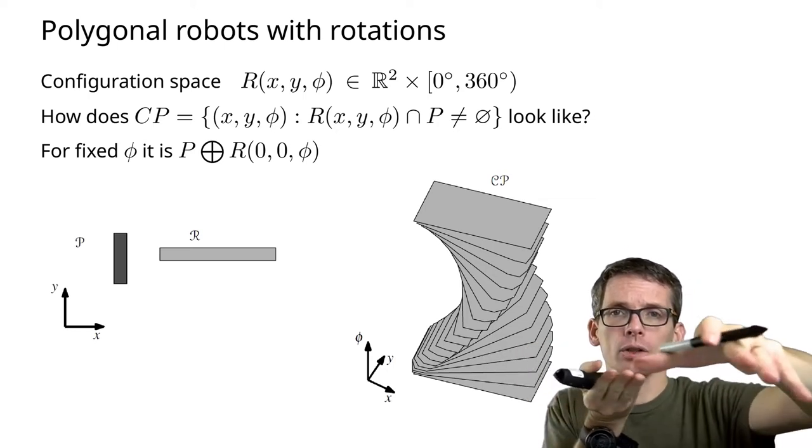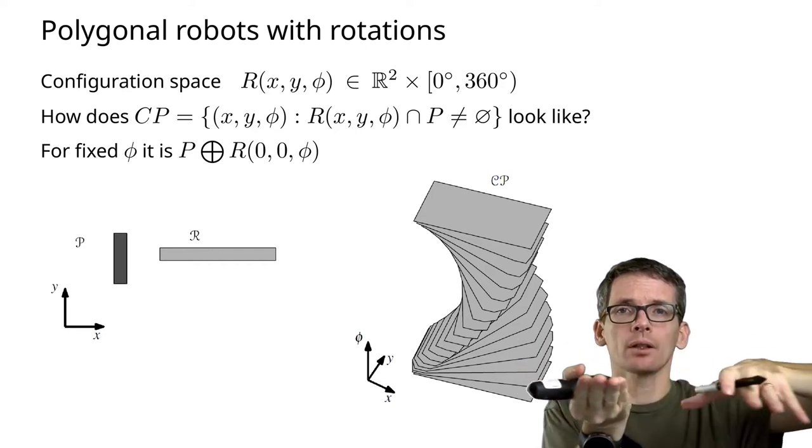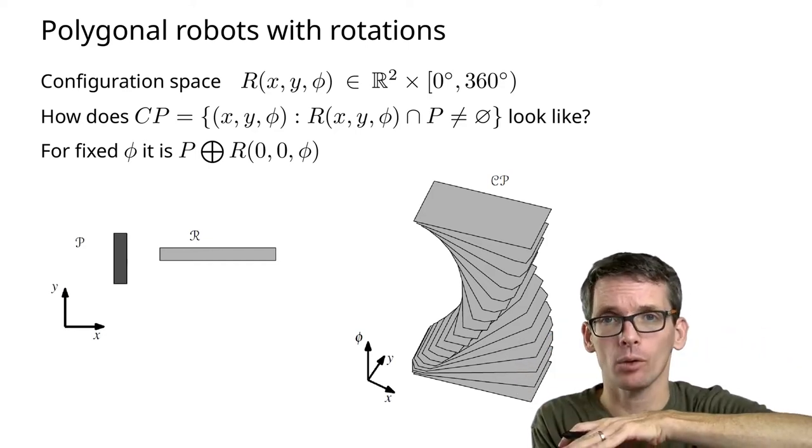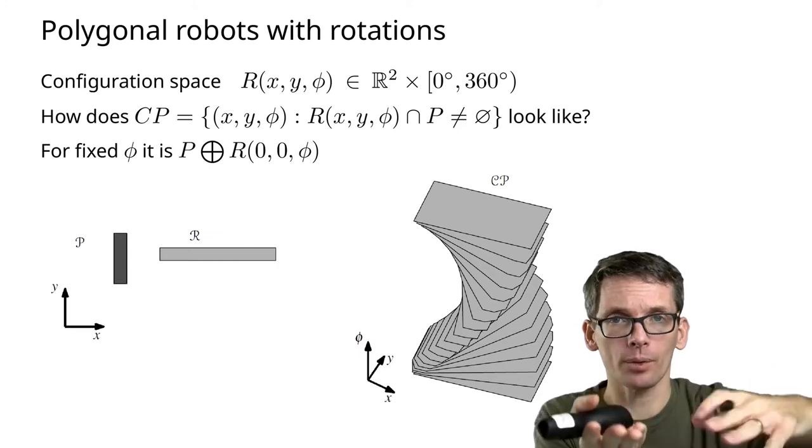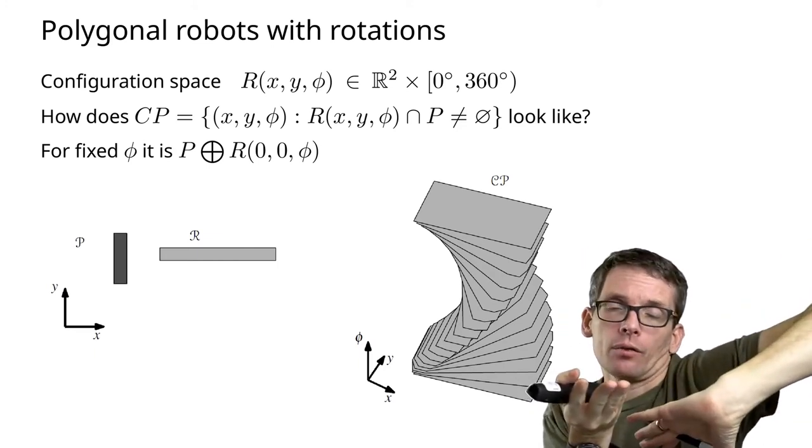this just looks like the forbidden space of translating robot, which is the Minkowski sum of the obstacle and the inverted robot.